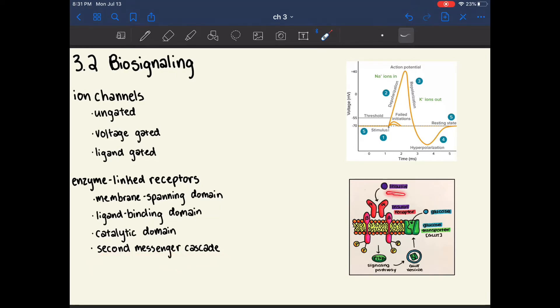So in this image, insulin is the first messenger, which means that insulin delivers the message from outside the cell to the ligand-binding domain. Then, a second messenger is released, which sends the message throughout the inside of the cell itself.